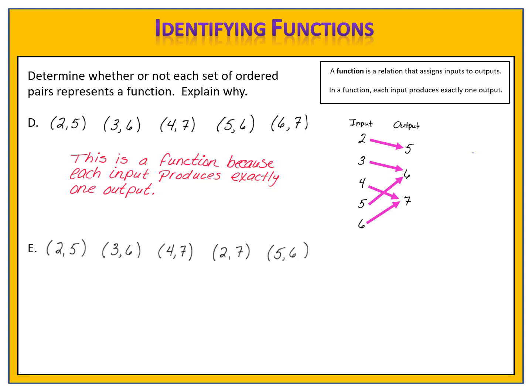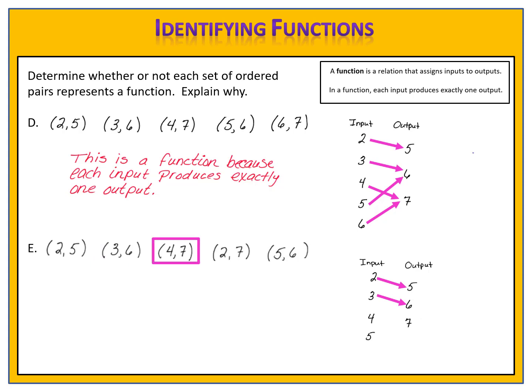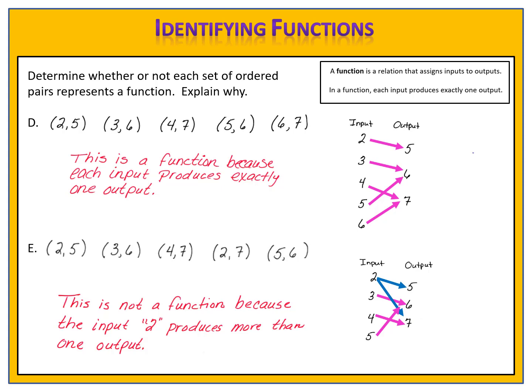How about Exercise E? We have the inputs 2, 3, 4, and 5, and the outputs 5, 6, and 7. The point (2,5) means input 2 with output 5. The point (3,6) means input 3 with output 6. The point (4,7) means input 4 with output 7. The point (2,7) means input 2 with output 7. And (5,6) means input 5 with output 6. Does this relation represent a function? We have to ask ourselves if each input produces exactly one output. Notice the input 2 has two different outputs, 5 and 7. Therefore this relation is not a function because input 2 produces more than one output.